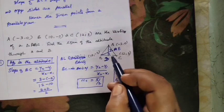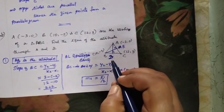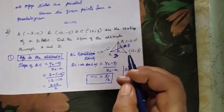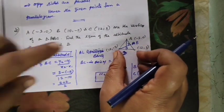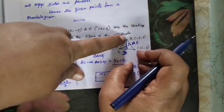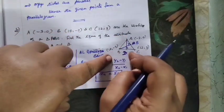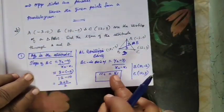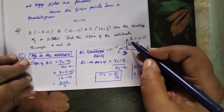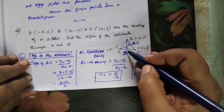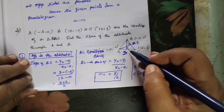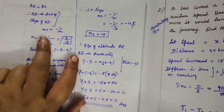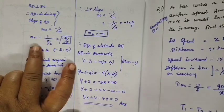Altitude AD and altitude BE. We use slope point form. First, we have slope of BC, because AD is the altitude. It is perpendicular to the end of the triangle. We are going to find slope of BC. If slope of AD is perpendicular, the formula is M2 equal to minus 1 by M1.